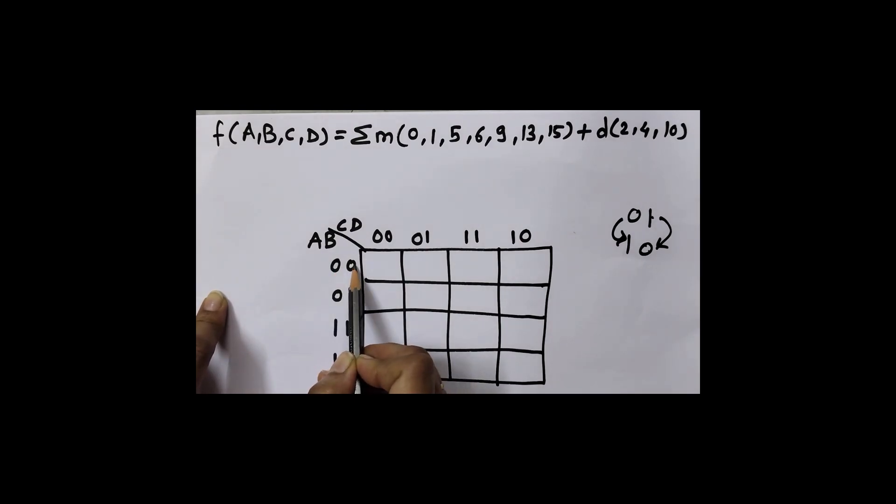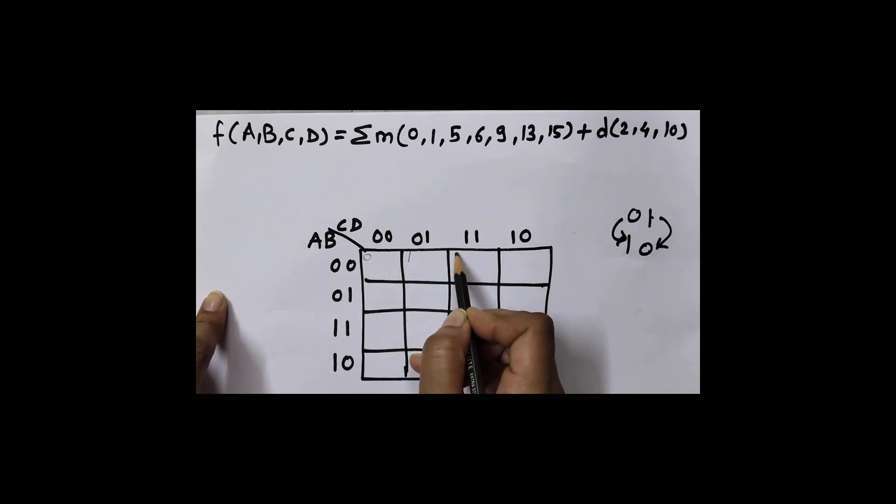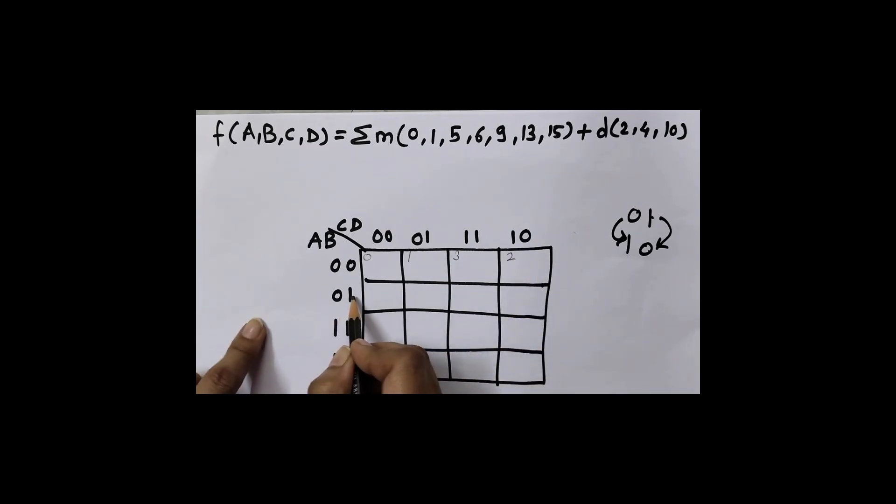Then we must know values of cells. Here you can see A is 0, B is 0, C is 0, D is 0, so this is 0. Then 0,0,0,1 is 1. 0,0,1,1 is 3. 0,0,1,0 is 2. Then 0,1,0,0 is 4, 5, 6, and 7. I am writing these values based on value of A, B, C and D. Then 1,1,0,0 is 12, here it is 13, 14, 15. And 1,0,0,0 is 8, 9, 10, and 11. What we are doing is skipping the third column, so here we need to skip third row also. After 7, here what we write is 8, 9, 10, 11, then 12, 13, 14, and 15.